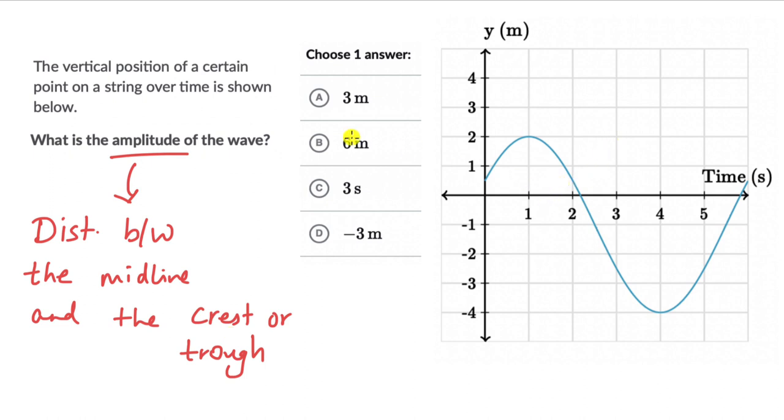In the graph, we can see that this distance right here, the distance between the crest and the trough, is starting from 2 and going till minus 4.